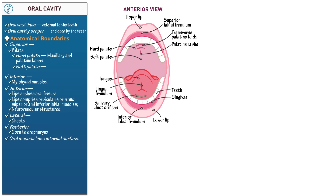Denote that the soft palate comprises the palatine aponeurosis, which attaches anteriorly to the hard palate, and four sets of paired muscles. During swallowing, the soft palate raises to block foods and liquids from the posterior opening to the nasal cavity. In our diagram, label the soft palate and the uvula, which extends from the free edge of the soft palate at the midline.